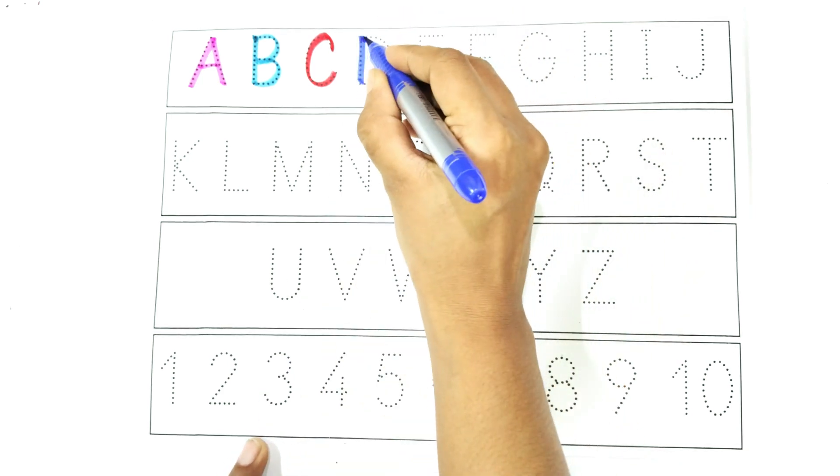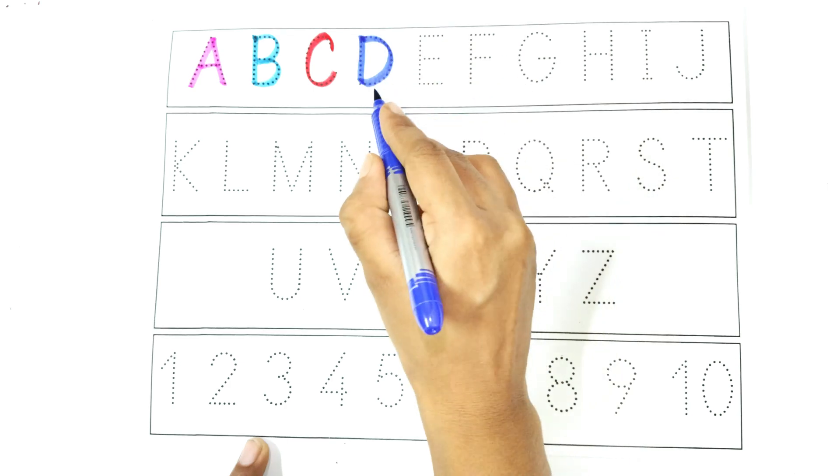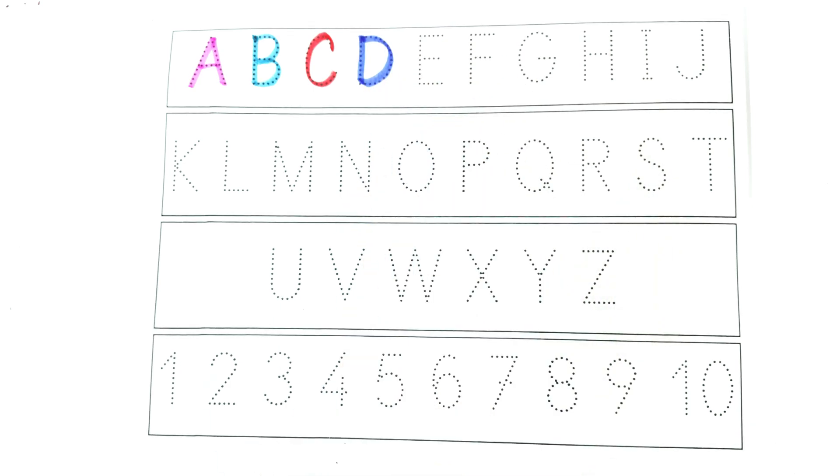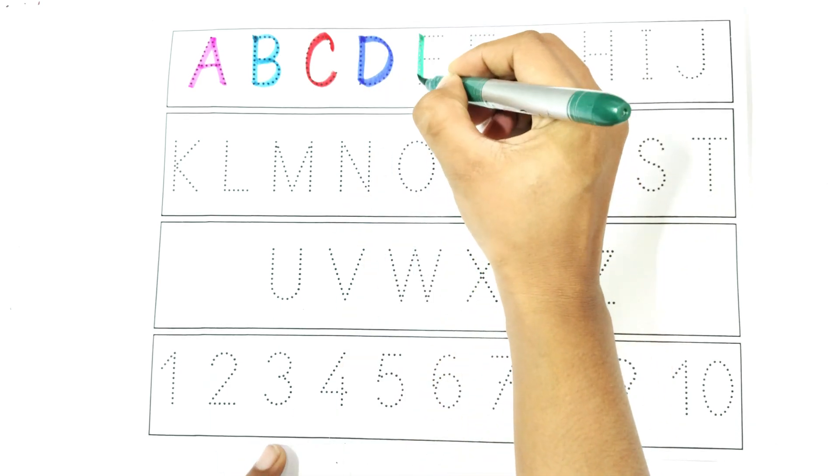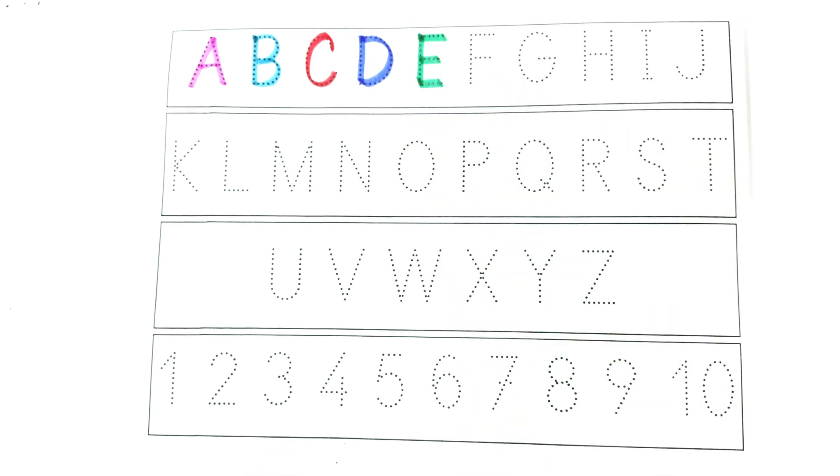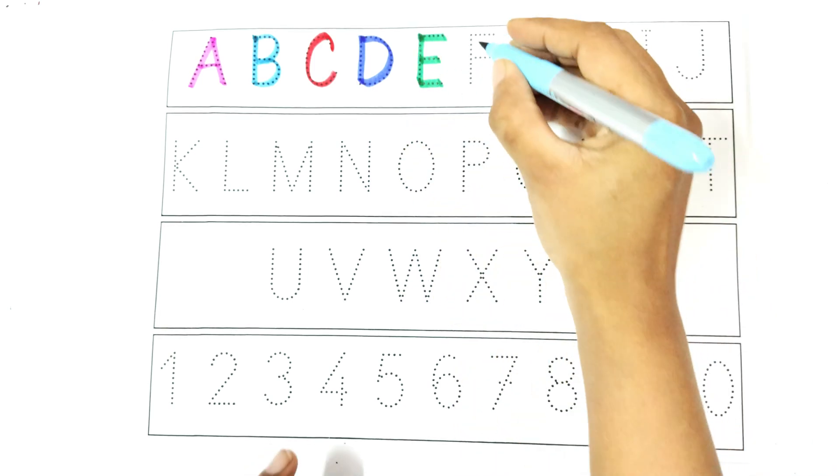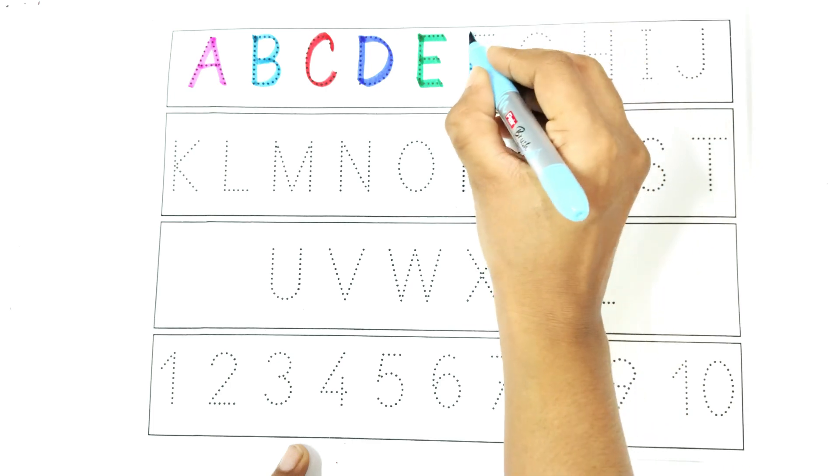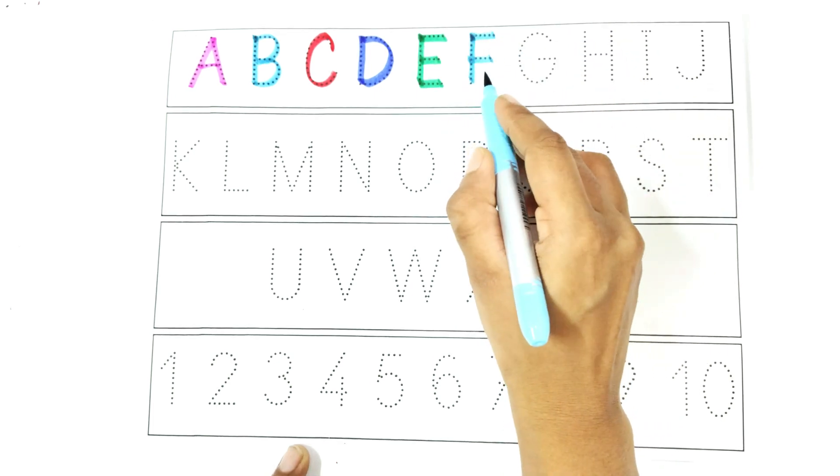Write with me: D. D is for duck. Write with me: E. E is for elephant. Write with me: F. F is for flower.